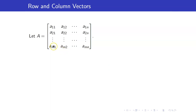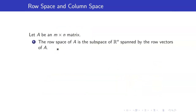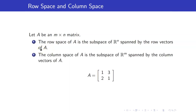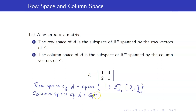Suppose that you have an m by n matrix. When we talk about the row vectors of A, those are just the rows of A, and the column vectors of A are just the columns. The row space of a matrix A is the subspace spanned by the row vectors of A, and the column space of A is the subspace spanned by the column vectors of A. For example, with this simple 2x2 matrix, the row space of A is the span of its row vectors: span of (1, 3) and (2, 1). The column space of A is just the span of its column vectors.